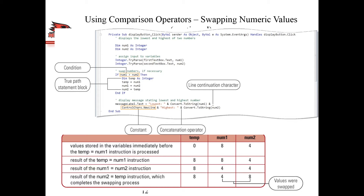We have the control character ControlChars.NewLine, which basically does the equivalent of pressing Enter. We want to display the second number on the next line, and that's what ControlChars.NewLine does. Even though it's in the same label, the content has to be defined in two different lines. If you want text in more than one line in a label, you use ControlChars.NewLine - it's just a constant assigned for the Enter key. Then another concatenation with 'highest' and convert to string num2.